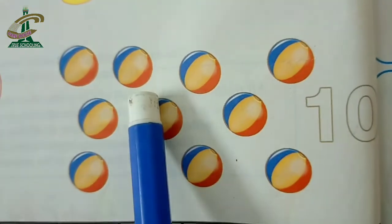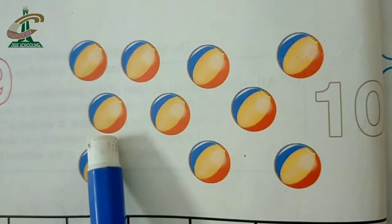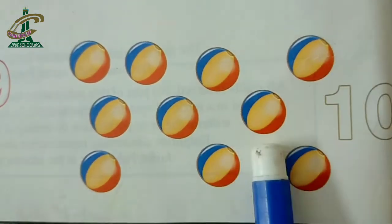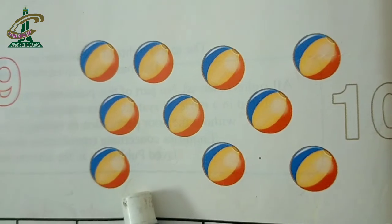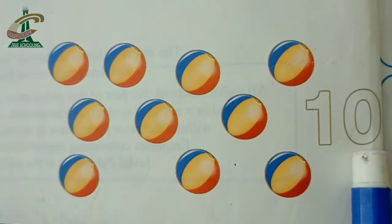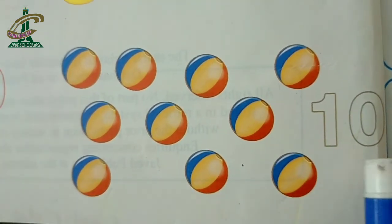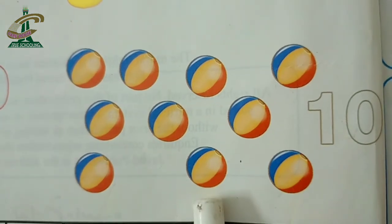One, two, three, four, five, six, seven, eight, nine, ten. One, zero, ten. One, zero, ten. Ten balls. How many balls? Ten balls.